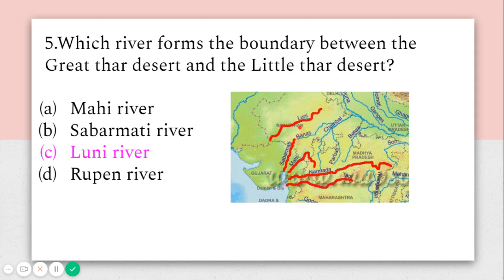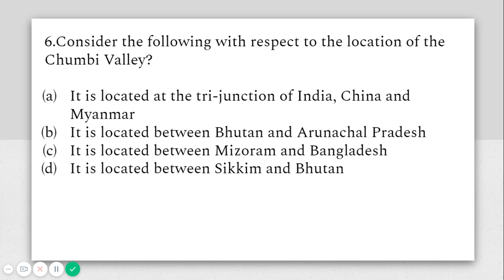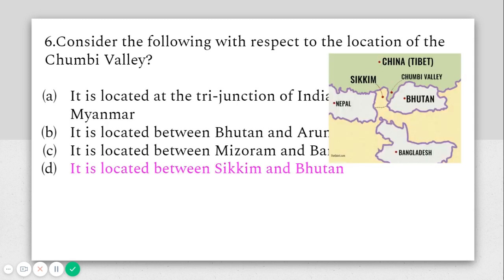The sixth question: consider the following with respect to the location of Chumbi Valley, which was in the news recently. Option A says it is at the tri-junction of India, China, and Myanmar — incorrect. Option B says it is between Bhutan and Arunachal Pradesh — also incorrect. Option C says between Mizoram and Bangladesh — also incorrect. The correct answer is D: it is located between Sikkim and Bhutan, as you can see in the map.